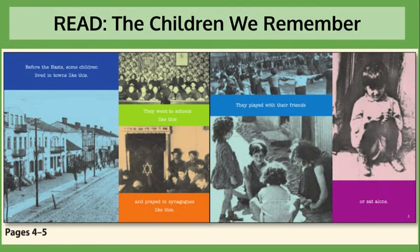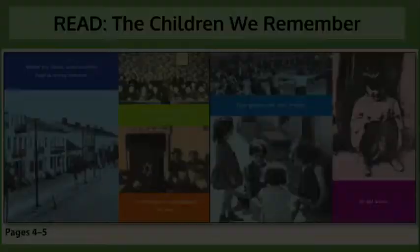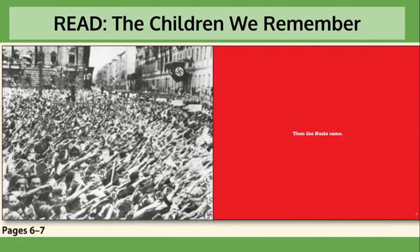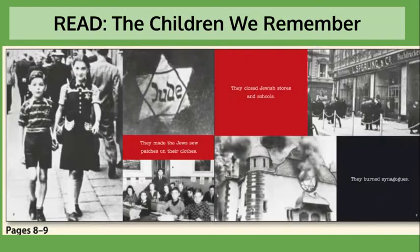Before the Nazis, some children lived in towns like this. They went to schools like this, and prayed in synagogues like this. They played with their friends or sat alone. Then the Nazis came. They made the Jews sew patches on their clothes. They closed Jewish stores and schools. They burned synagogues.